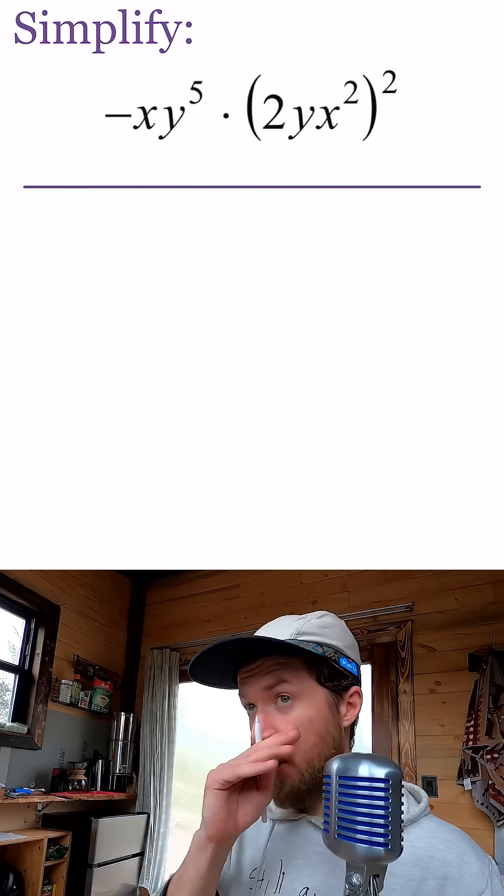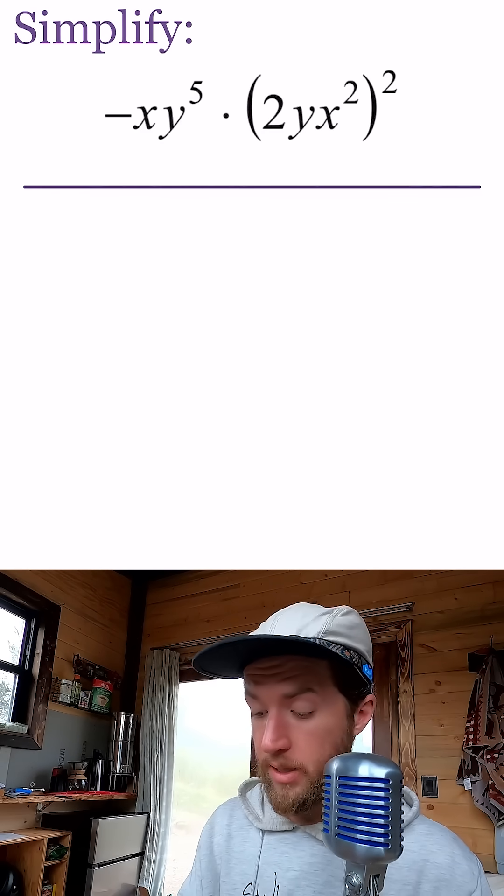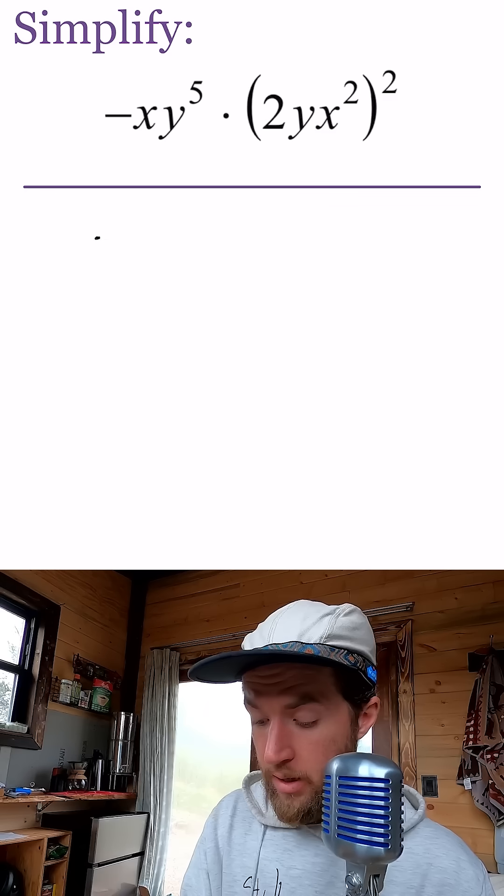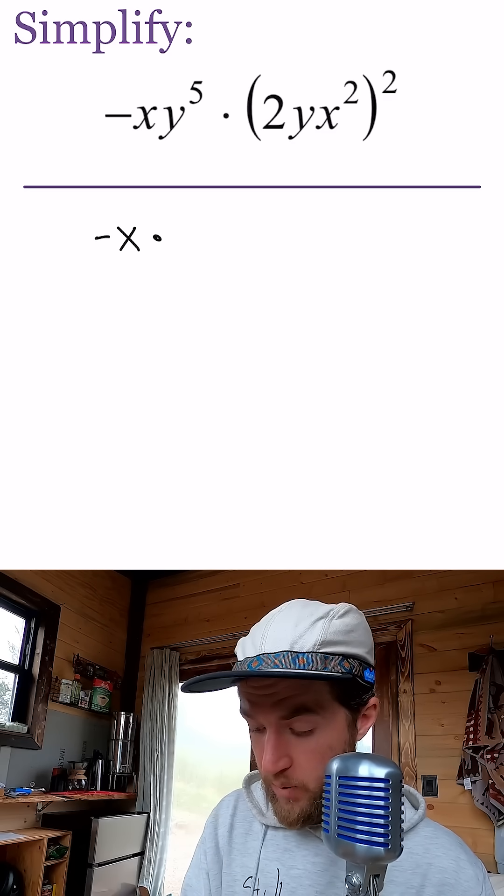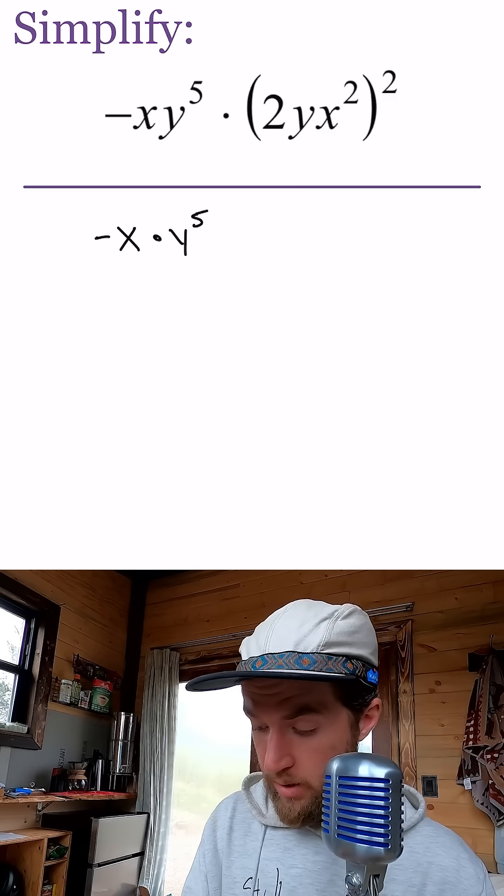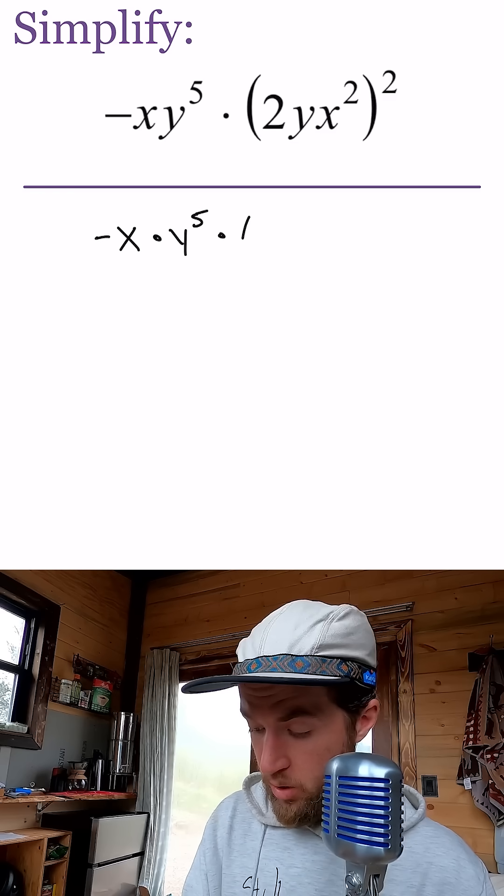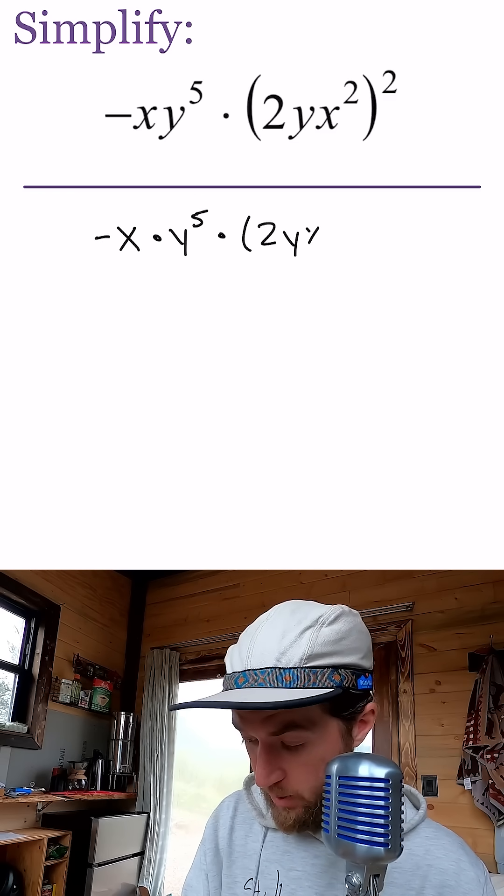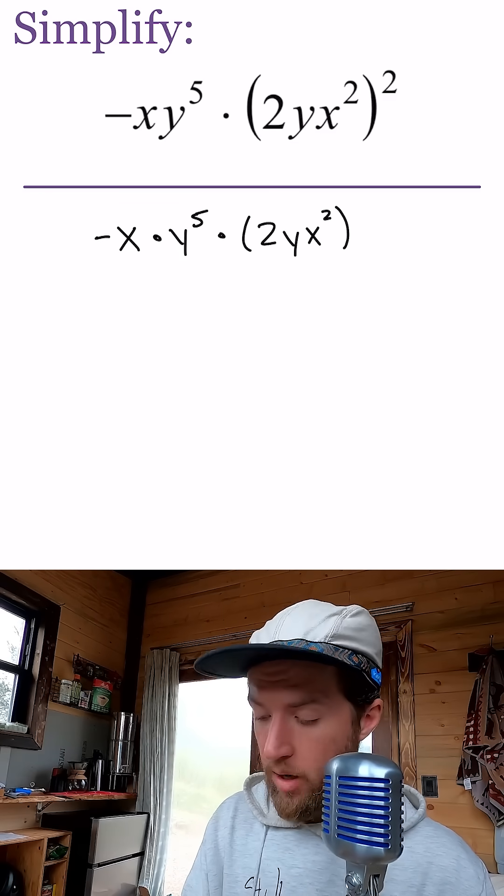Okay, we are simplifying. We got x's and y's, we got parentheses, we got exponents, all the good stuff here. So negative x times y to the fifth times two y x squared, and all of that squared.